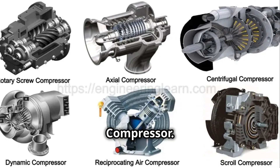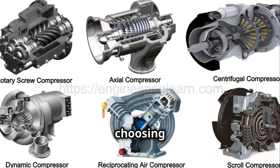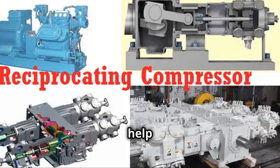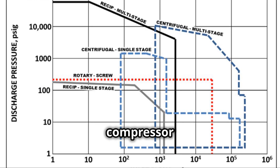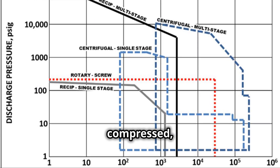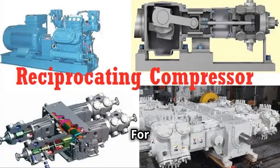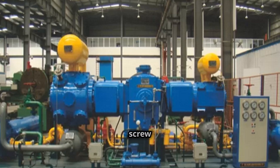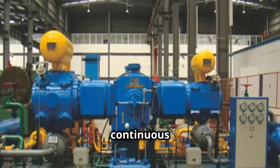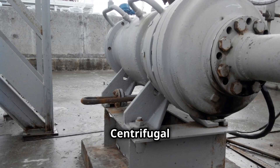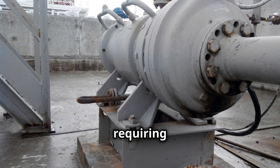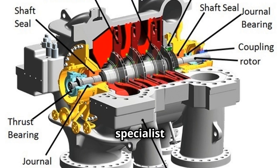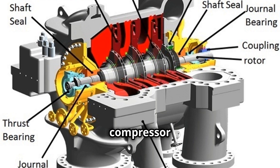Choosing the right compressor — with so many different types available, choosing the right one can seem daunting. However, understanding the strengths and weaknesses of each type can help make the selection process easier. Factors to consider include the required pressure and flow rate, the type of gas being compressed, the duty cycle, and the budget. For applications requiring high pressures and intermittent use, reciprocating compressors are often a good choice. Rotary screw compressors are a good option for continuous flow of compressed air at moderate pressures. Centrifugal compressors are ideal for applications requiring very high flow rates and moderate pressure ratios. Consulting with a compressor specialist is always recommended to ensure selection of the most appropriate compressor for a specific application.